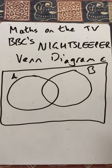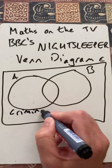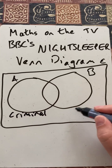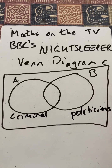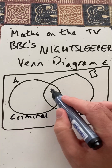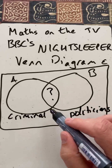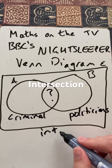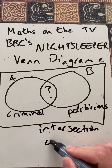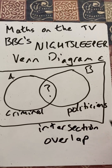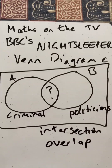The journalist talks about the Venn diagram and says there might be a group of criminals and a group of politicians. And her question was, who would fit into what's called in maths the intersection, or known as the overlap — who overlaps both of those? That's the question. Thanks.